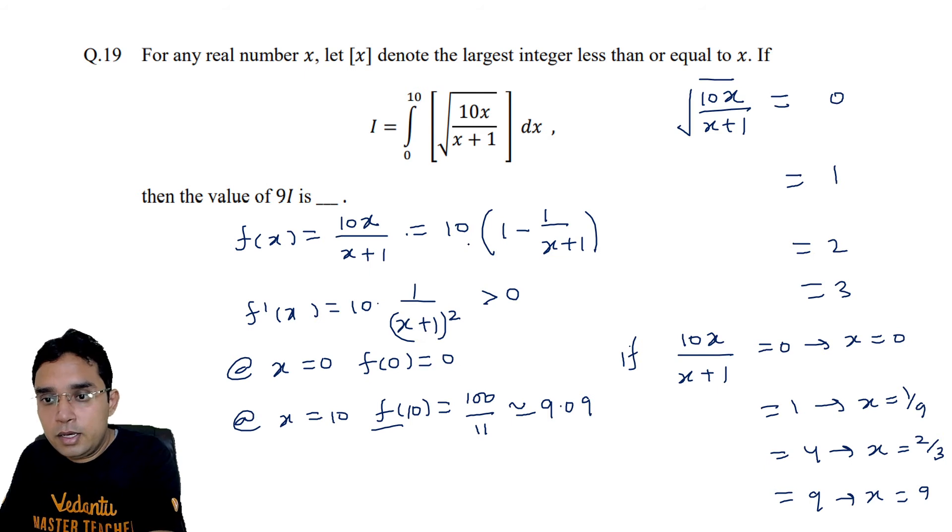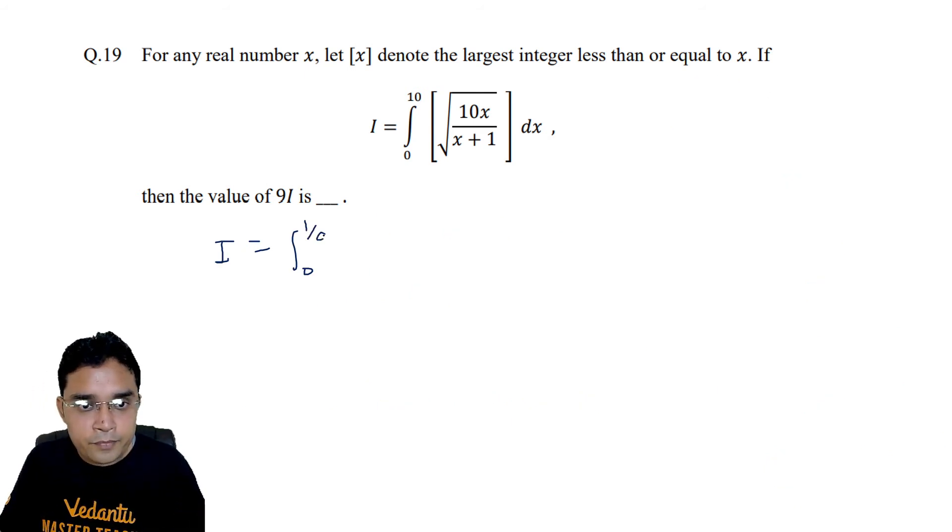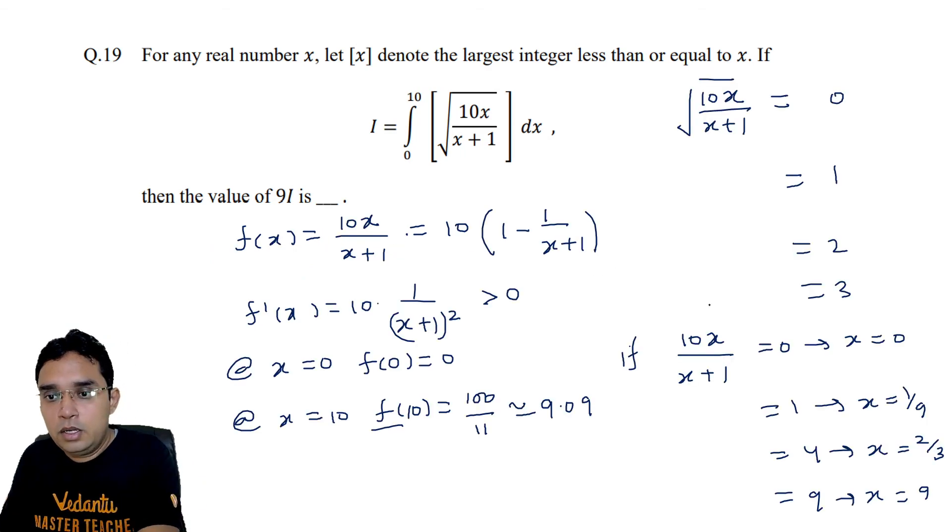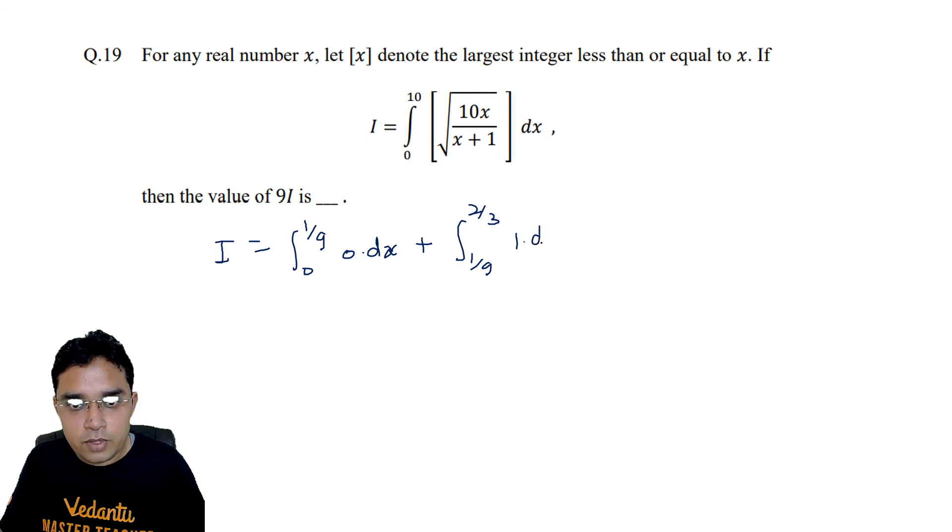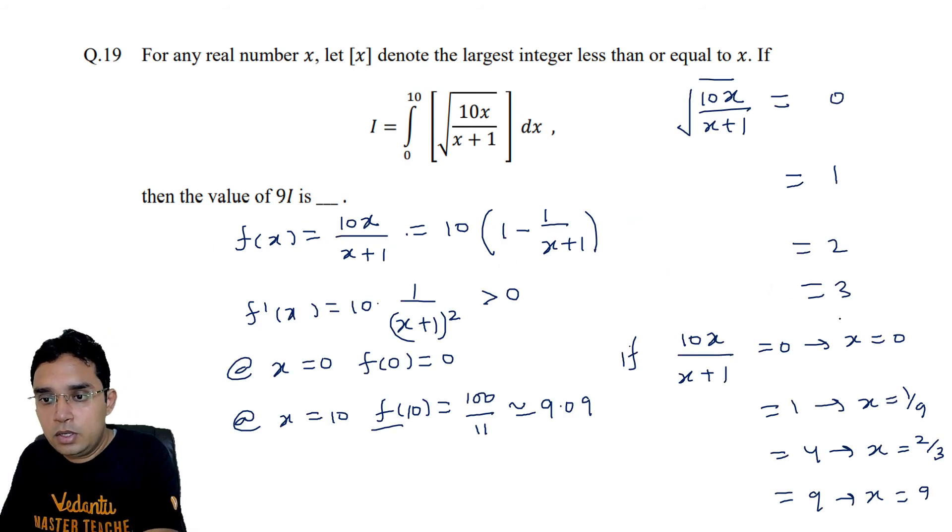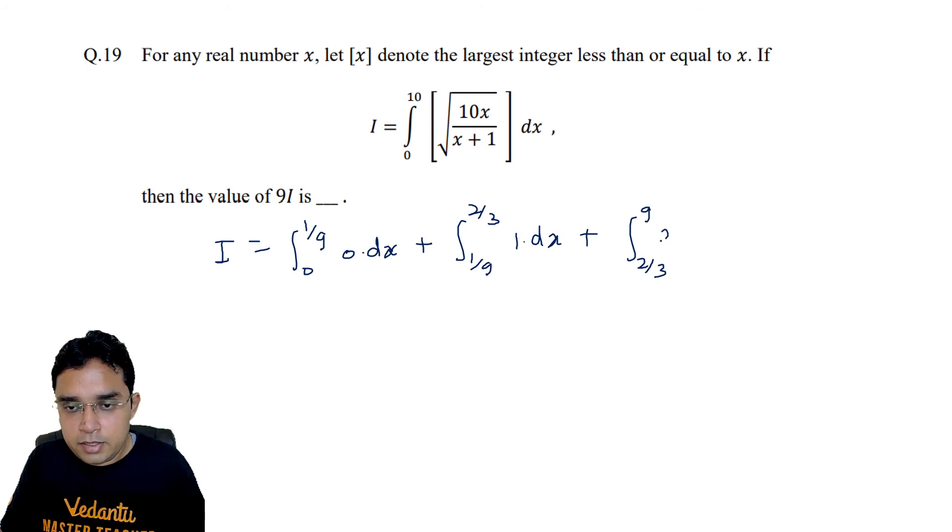So my I will be equal to: first my limit will be broken from 0 to 1/9 and this greatest integer will be 0, and then 1/9 to 2/3 and this greatest integer will be 1 only.